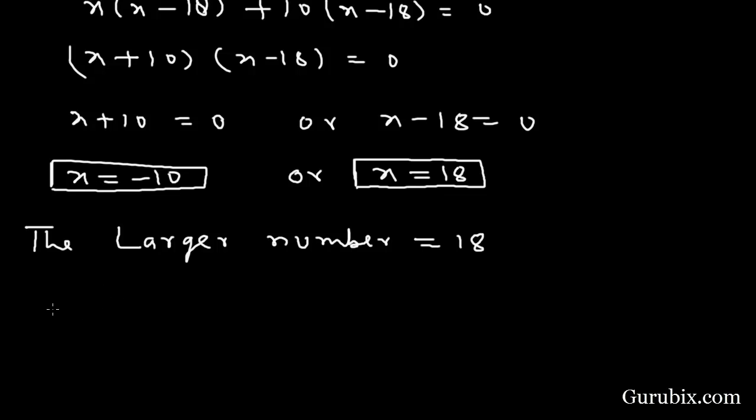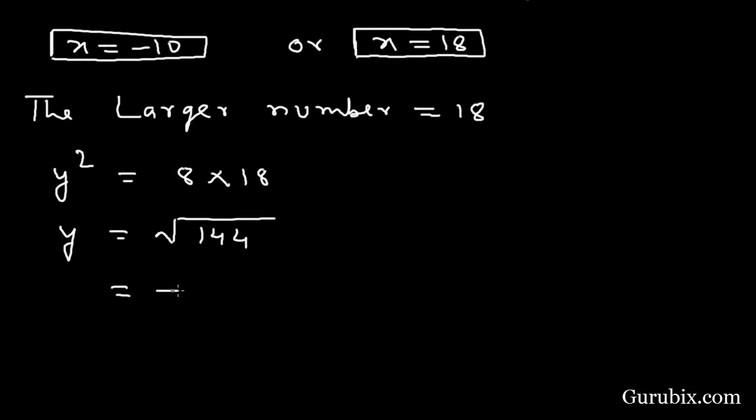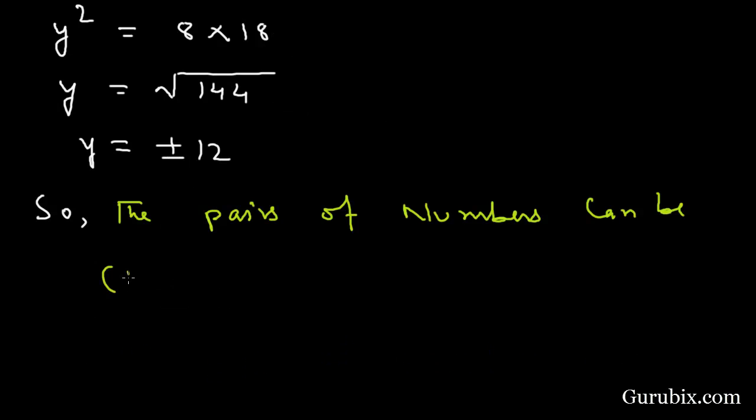Now we shall find the smaller number. We are given that the square of the smaller number is 8 times the larger number, which means 8 times 18. This equals y² = 8 × 18. So y = square root of 144. So the pairs of numbers can be 18 and 12, or 18 and minus 12.